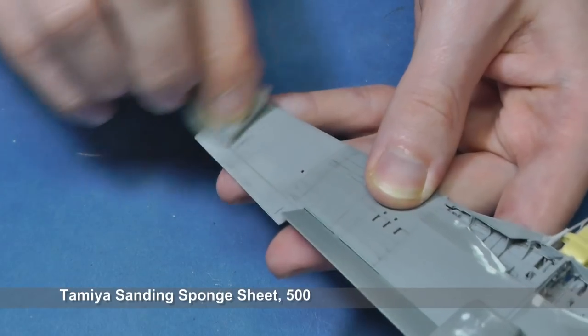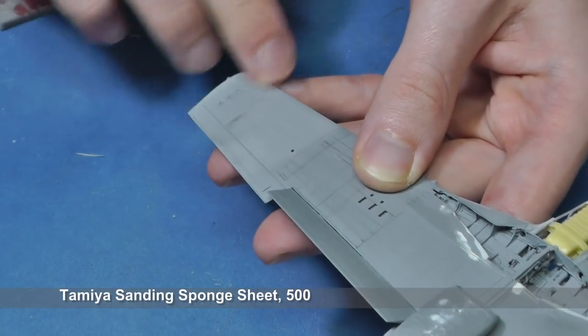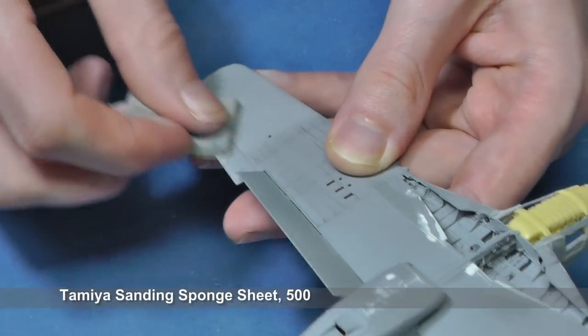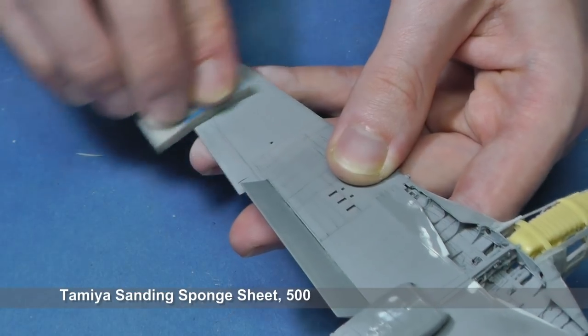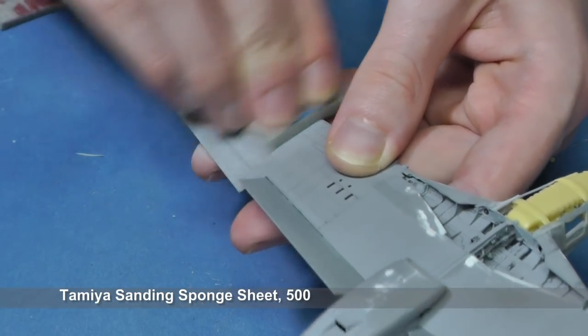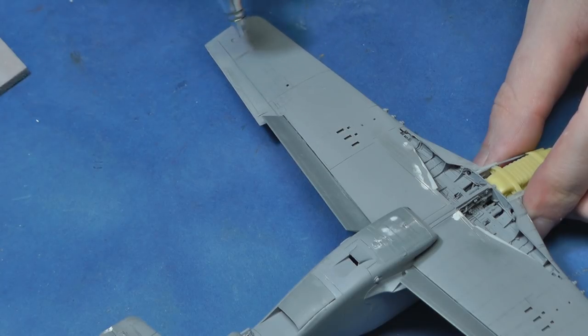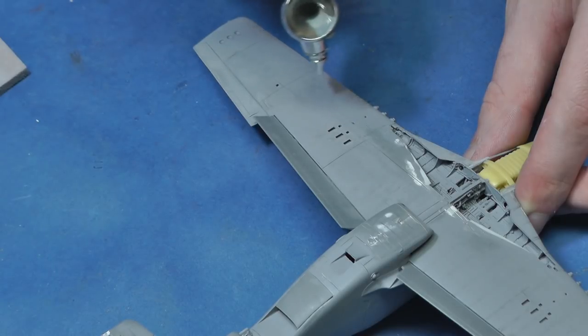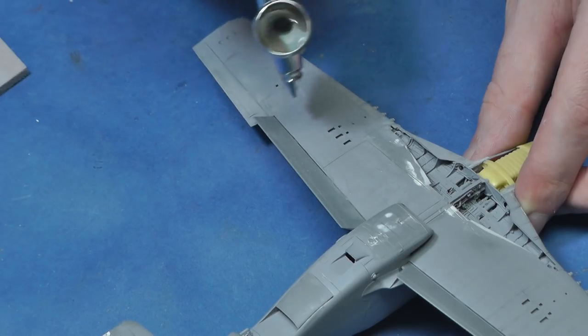The holes after riveting are very raised, and therefore I smooth the rivets with a sponge sandpaper. But now the rivets are clogged with dust after sanding, so I blow off the dust with airbrush and water.